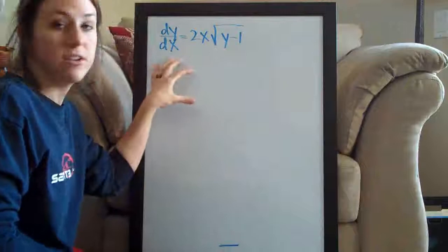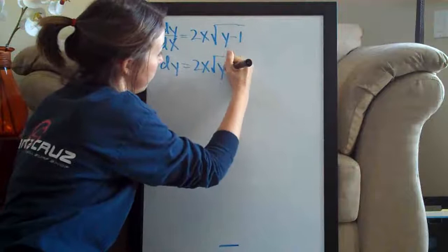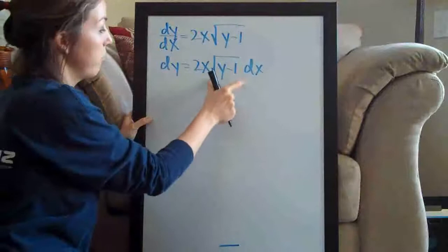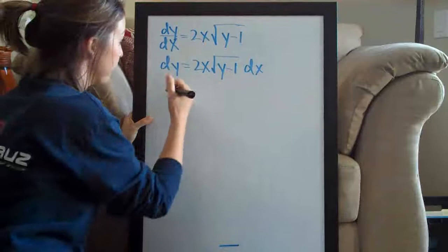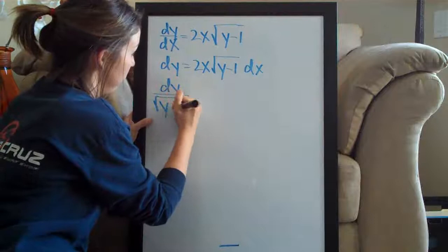The first thing we need to do is separate the variables. Our goal is to get x's on the right side and y's on the left side. We multiply dx by both sides, so we get dy equals 2x times the square root of y minus 1 dx. Then we divide both sides by the square root of y minus 1, leaving us with dy over the square root of y minus 1 equals 2x dx.